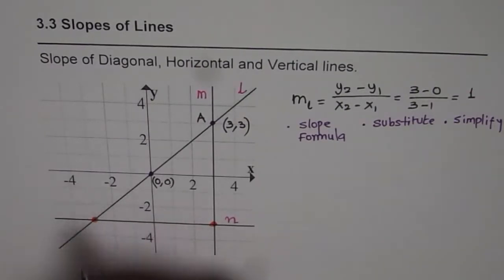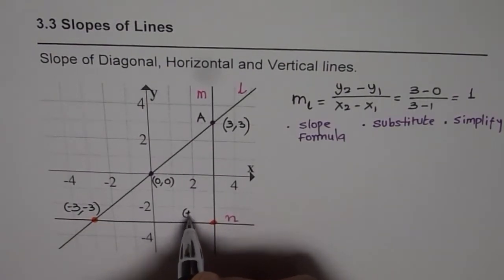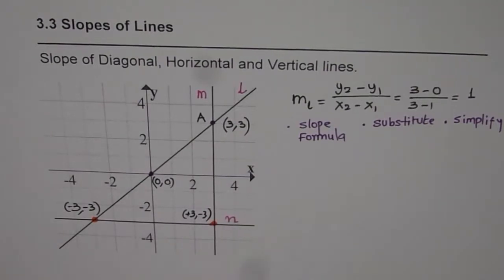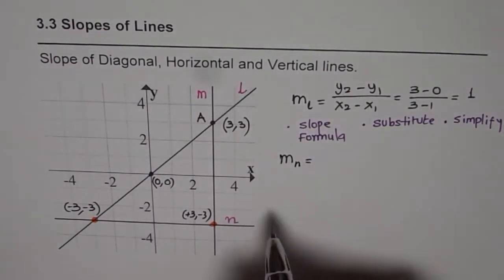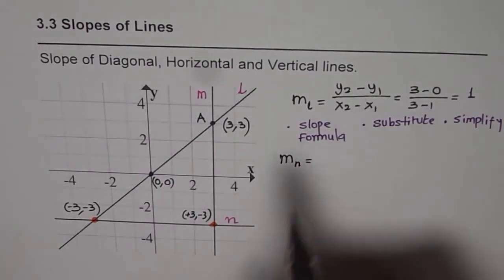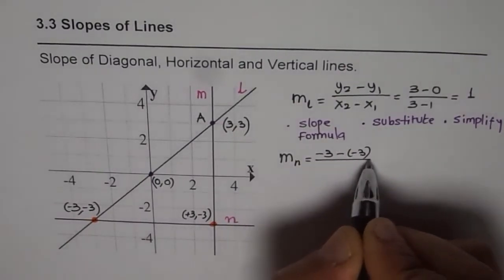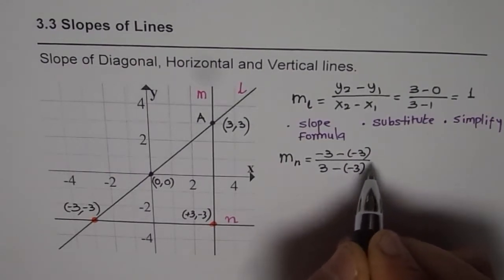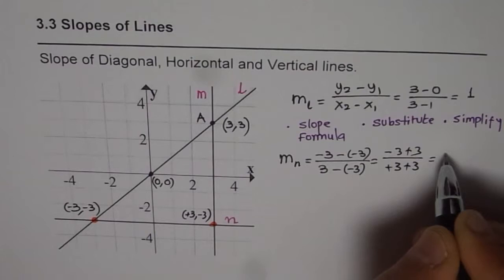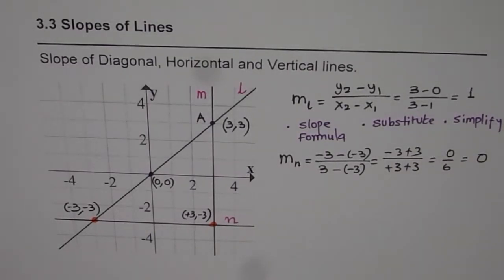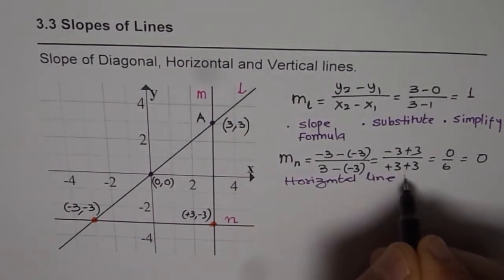We will use these two points. This point is (−3, −3) and this one is (3, −3) — x value is plus 3 and y is minus 3. So we are now finding slope of line N. Using the formula y2 minus y1 divided by x2 minus x1: that is minus 3 minus of minus 3 divided by plus 3 minus of minus 3, which gives us minus 3 plus 3 over plus 3 plus 3, which is 0 over 6, and that is 0. So as expected, slope of a horizontal line is always 0.